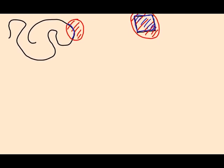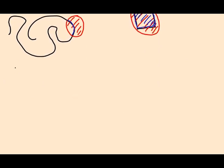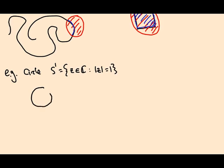Instead I'll give you a bunch of examples of things you always thought of as topological spaces that you can now equip with a topology. For example, the circle S1 — that is, the set of points z in the complex numbers such that |z| = 1. There's always a distinction: the disk is the thing with the inside filled in; the circle is just the boundary. So S1 is a subset of the plane, and it gets a subspace topology.